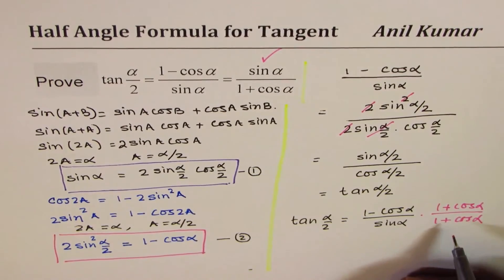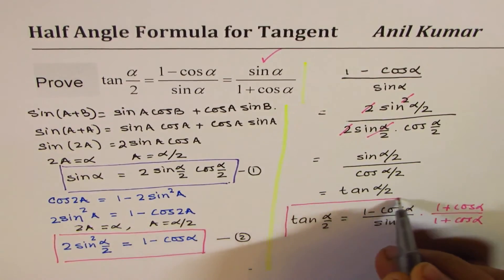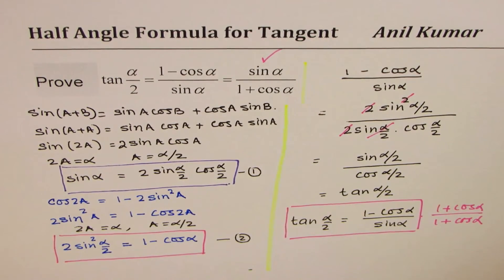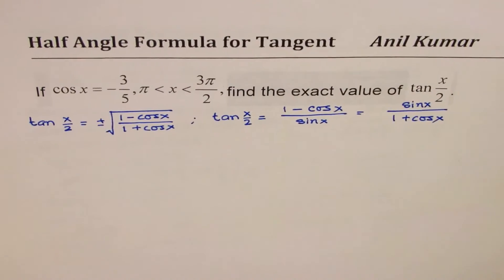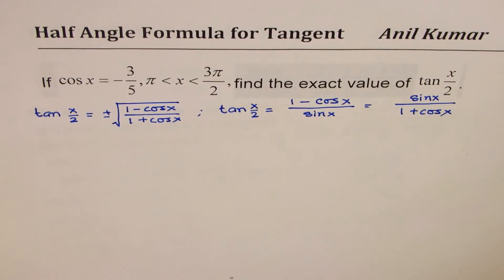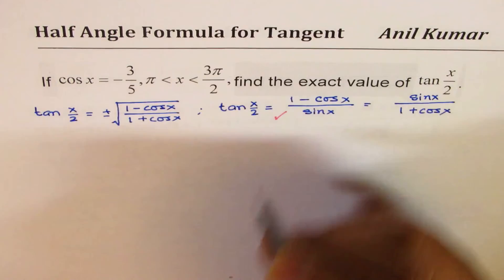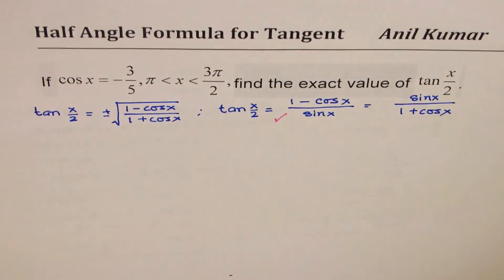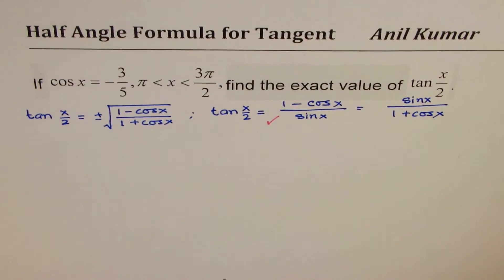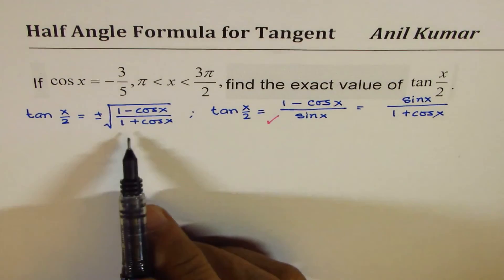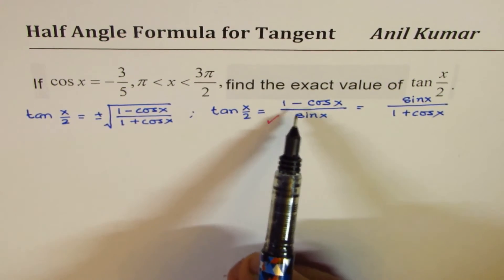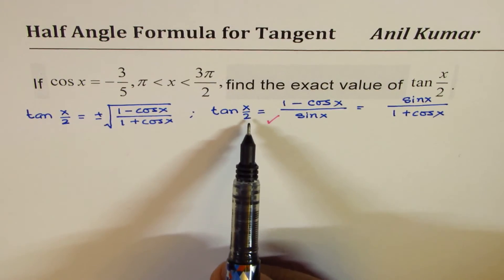We are going to use this formula to solve our question. You can use any formula, but I prefer to use 1 minus cos x over sin x since it gives simpler calculations — no square roots and no need to worry about plus or minus sign. The simplest formula is 1 minus cos x over sin x equals tan x by 2, and that is what we will use.